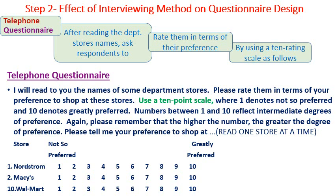The scale goes from 1 (not so preferred) to 10 (greatly preferred), and the respondent must select only one of those 10 grades. For example, Macy's may select 4, Macy's may select 7, and Walmart may select 5.